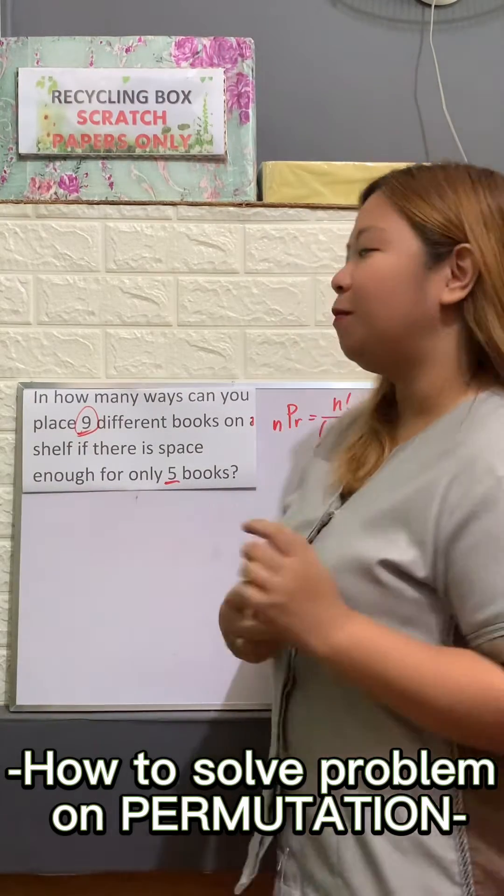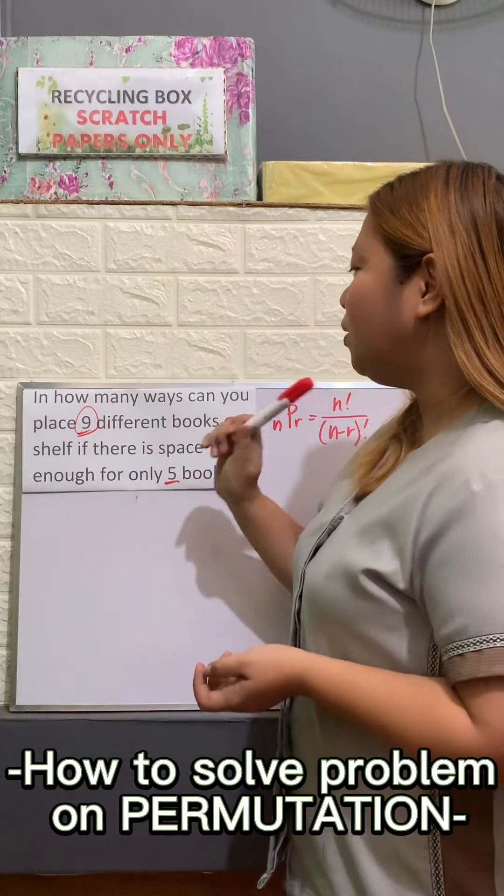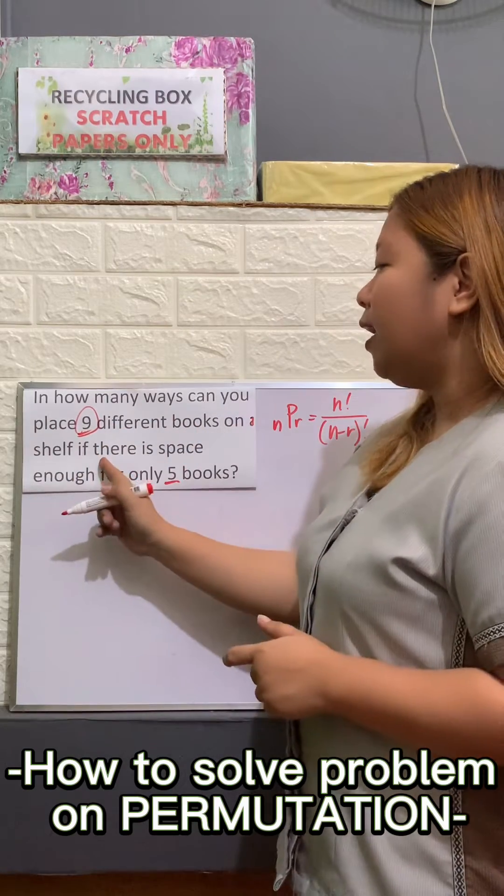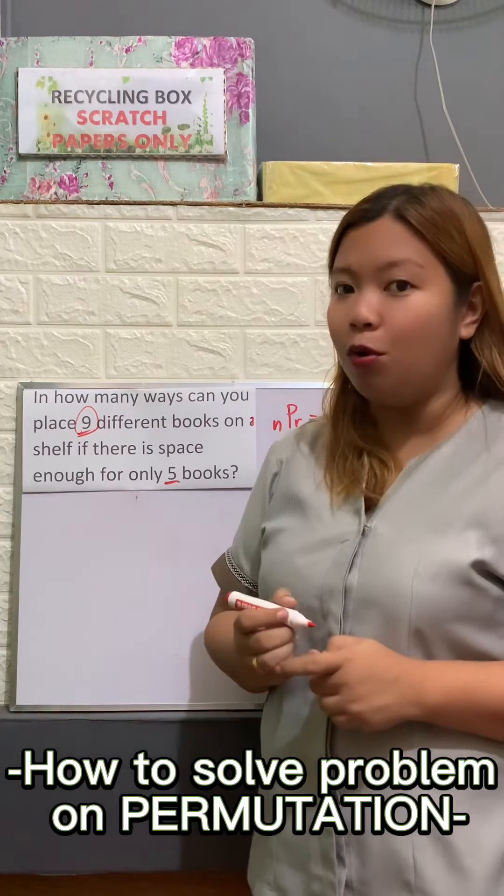I have another problem about permutation. In how many ways can you place 9 different books on a shelf if there is space enough for only 5 books?